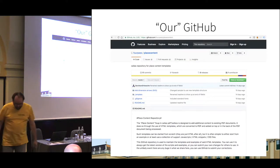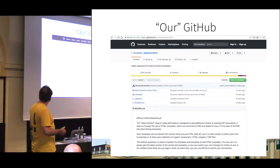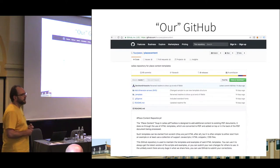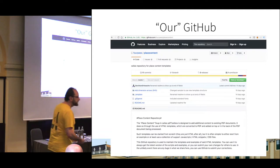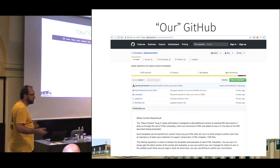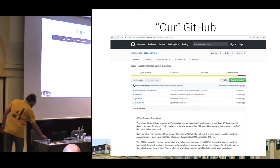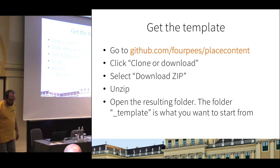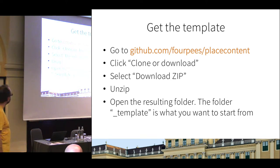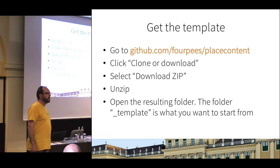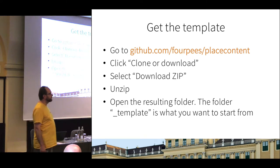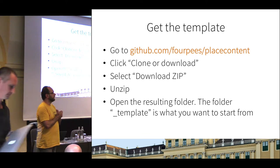GitHub ends up looking like this. You can create what they call repositories where you check in a bunch of stuff. You can make repositories that are private so only you can see them, or repositories that are public so whatever is in there can be shared with the whole world. And that's what we did — there is a repository at github.com/4P/place-contents that has some private contents and some public contents.